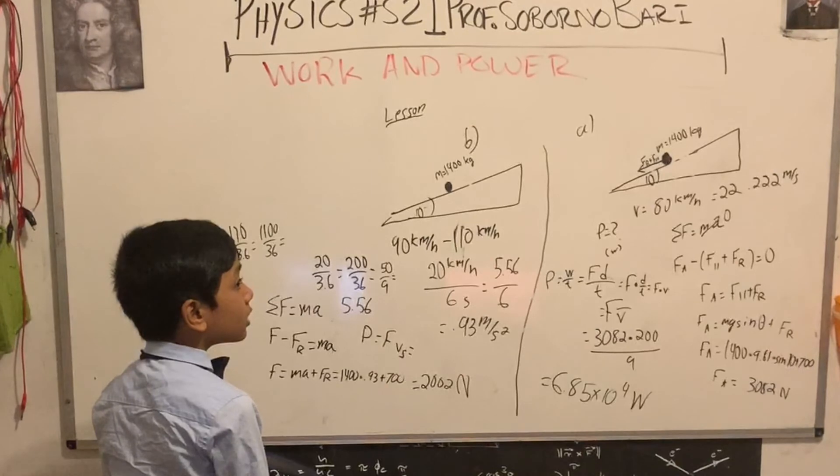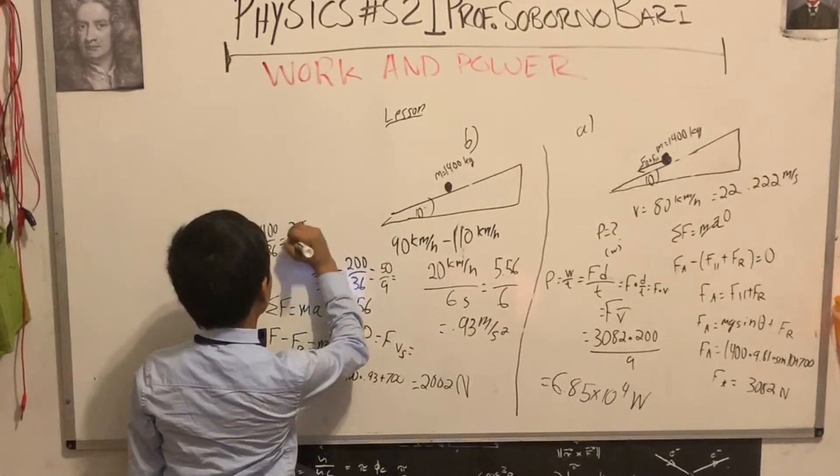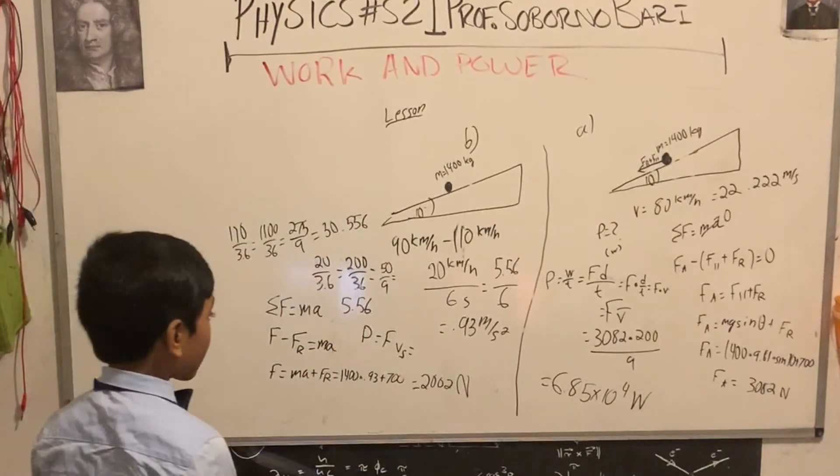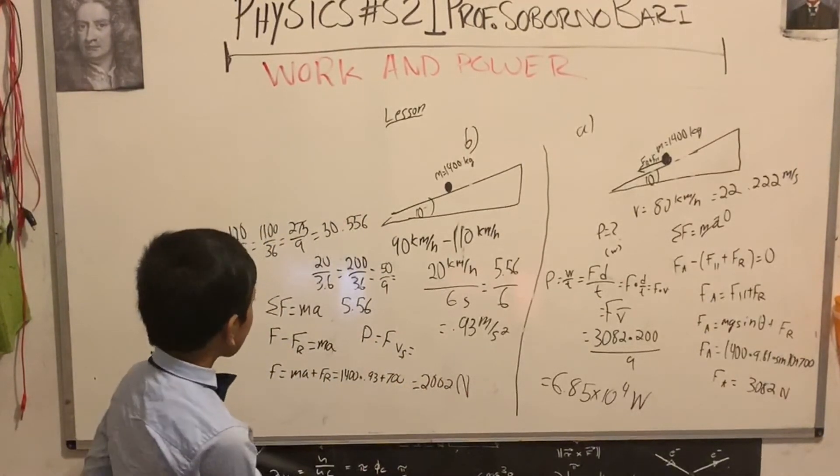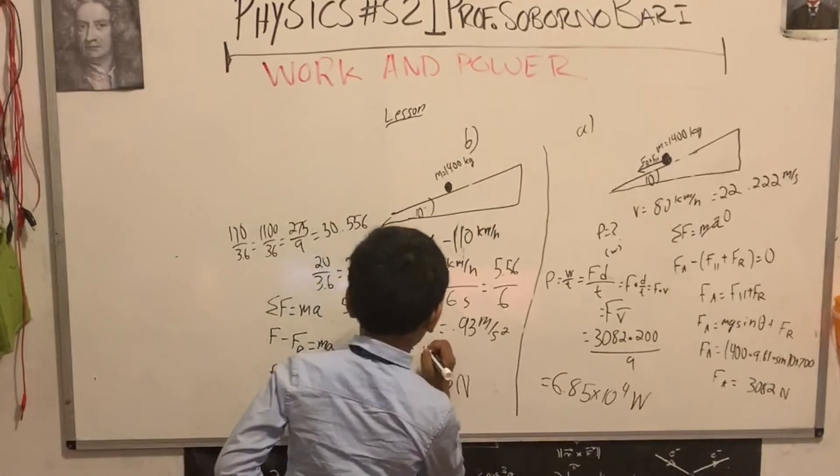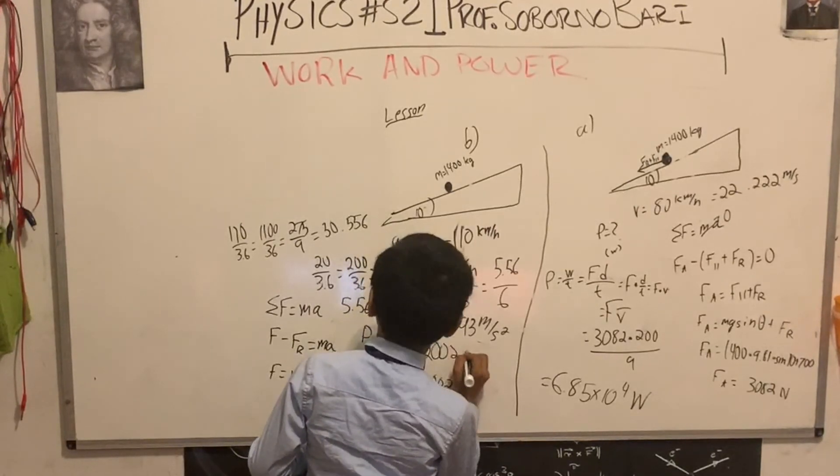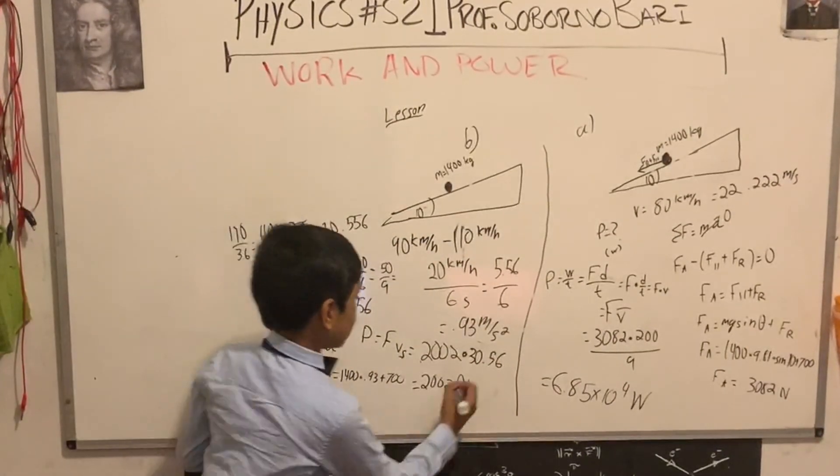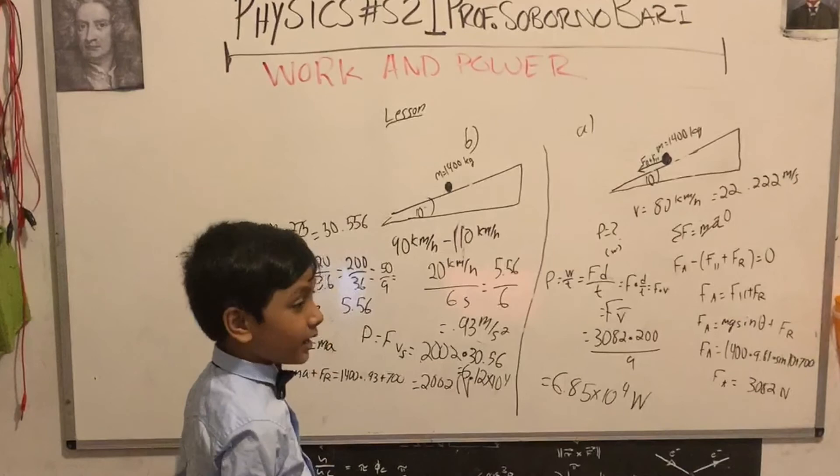Which should be 30.56. 275 over 9. 30.56. So why don't you just plug in F times v? Seems like it's taking quite some time though. Why don't you plug them in and show the folks what they need to calculate? I already have an answer. 2002 times 30.56. Okay, Professor. 61,172. 6.12 times 10 to the 4. Thank you. That should be the answer.